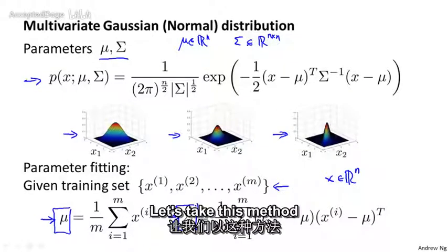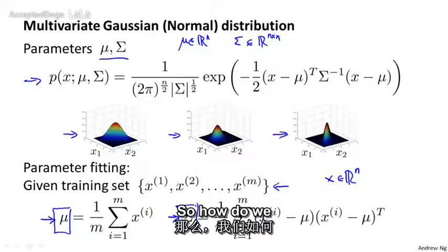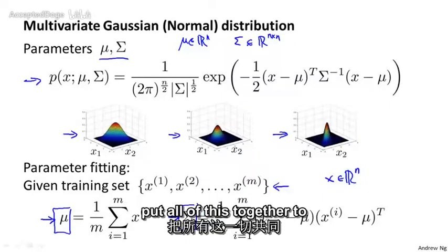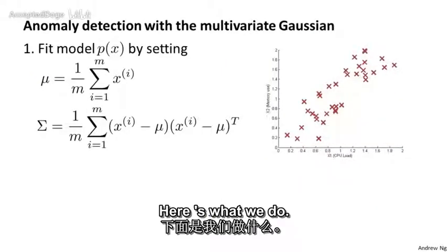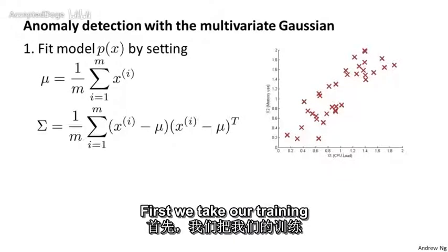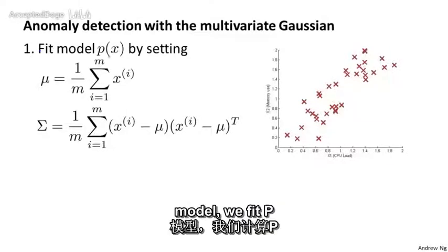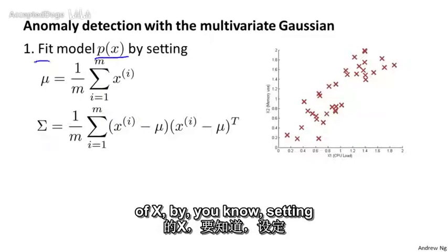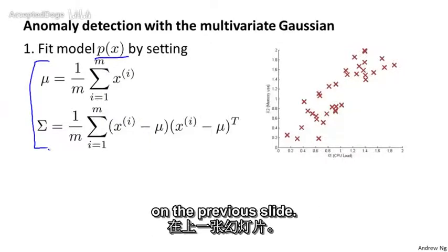Let's take this method and plug it into an anomaly detection algorithm. Here's how we put all this together. First, we take our training set and we fit the model. We fit P of x by setting mu and sigma as described on the previous slide.